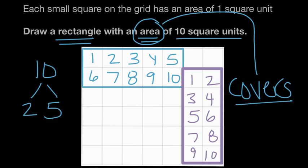So any rectangle that you can draw on the grid that either covers two rows of five square units or five rows of two square units is a rectangle with an area of 10 square units.